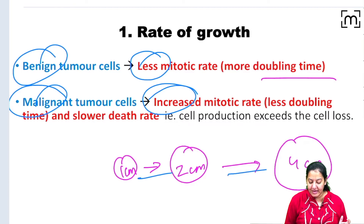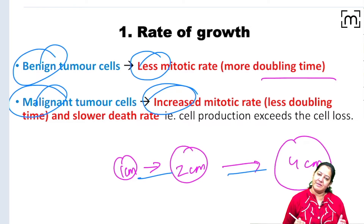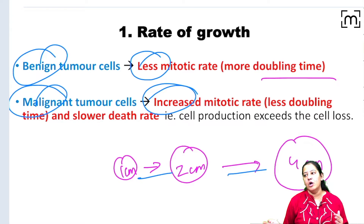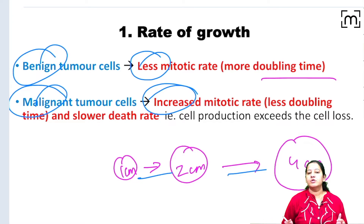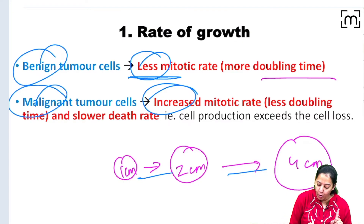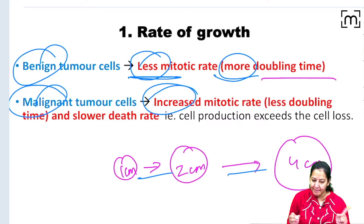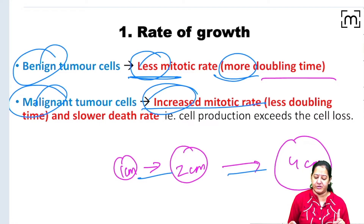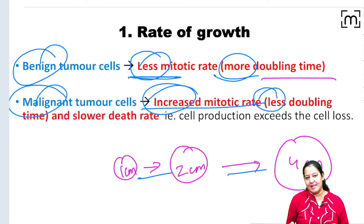Doubling time is inversely related to the rate of growth. More is the rate of growth, less time is required — the tumour doubles very fast. Less is the rate of growth, more will be the doubling time. Benign tumours are slow with low mitotic rate, so their doubling time is more. Malignant tumours are very fast in growth with high mitotic rate, so their doubling time is less.